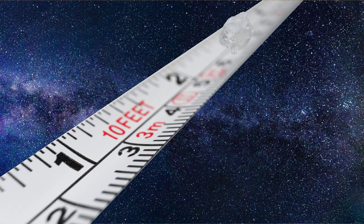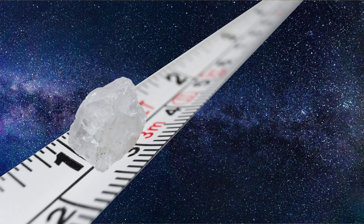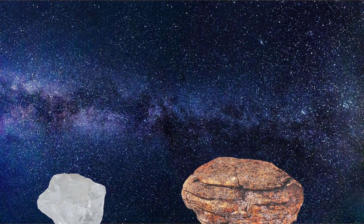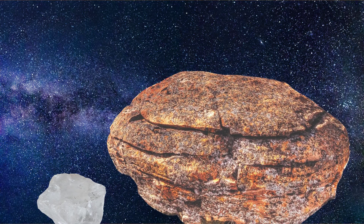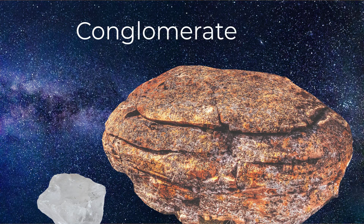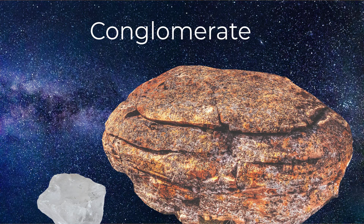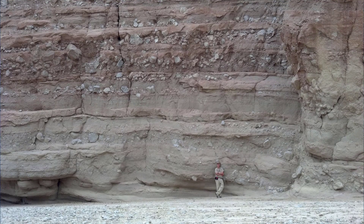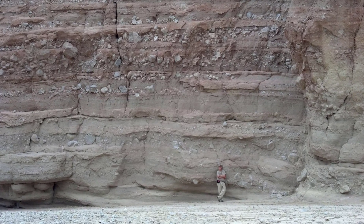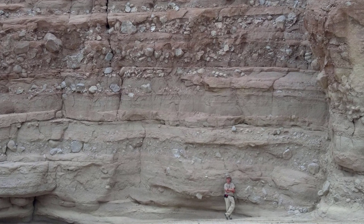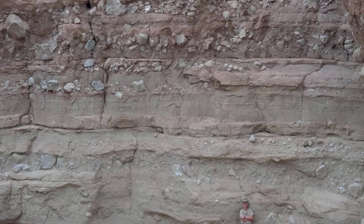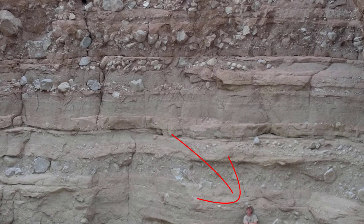Classifying sedimentary rocks is closely associated with the sizes of the individual clasts that make up that rock. Anything greater than sand-sized clasts right up to boulders is called a conglomerate or a breccia. This entire canyon wall is called a conglomerate because, although it does have some fine clay clasts, it is mostly made up of sand-sized to boulder-sized clasts. Notice the person for scale.